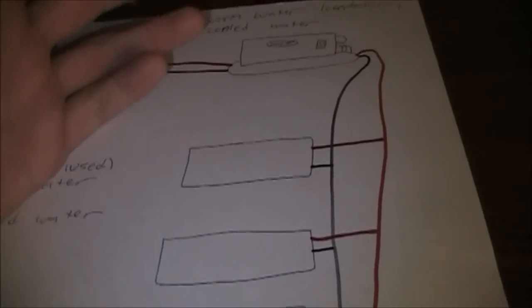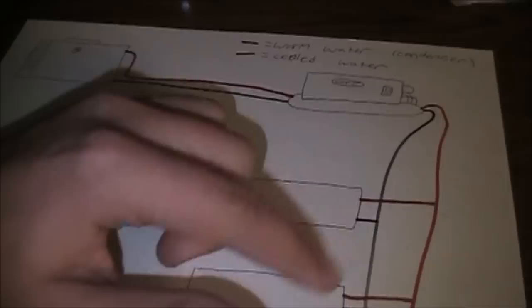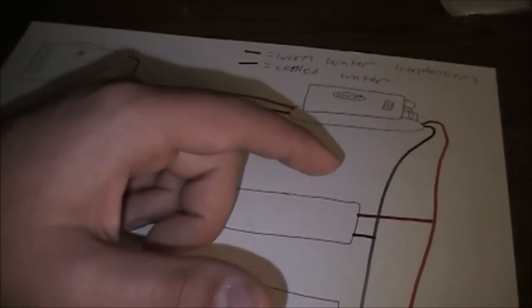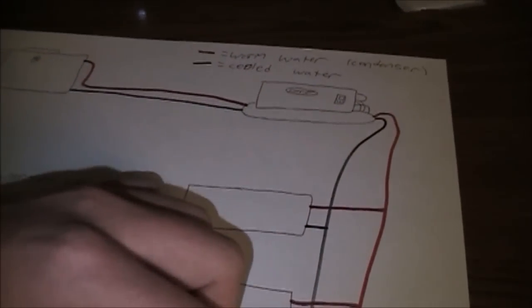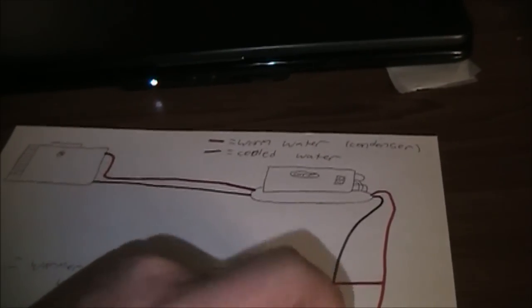But this black represents the chilled water, which is usually around 43 degrees Fahrenheit somewhere around in there, going to the coils and the air handlers. And then you got the water returning to the chiller to be chilled again. This water is usually around 50 degrees, sometimes over, depending on load.